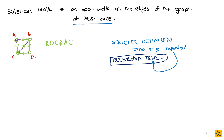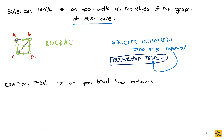The formal definition of an Eulerian trail is an open trail that contains all the edges of the graph. So an Eulerian walk in the less strict definition is an open walk where all edges of the graph occur at least once, which keeps the definition of a walk where repeated edges are allowed.